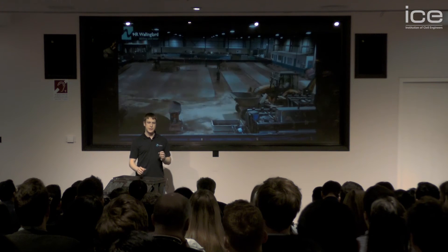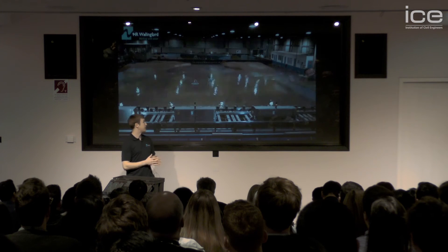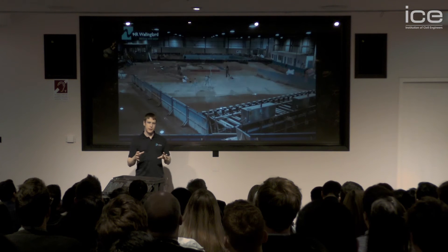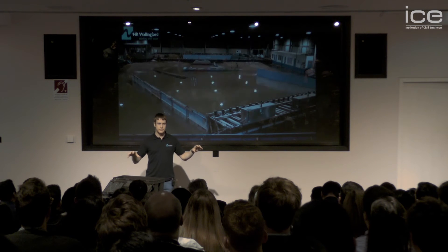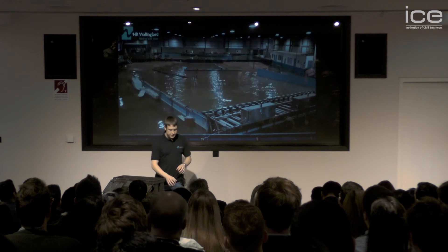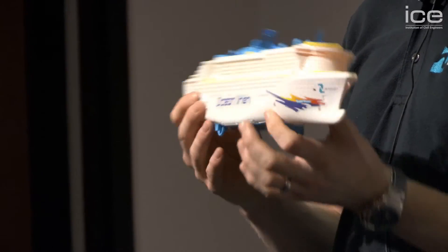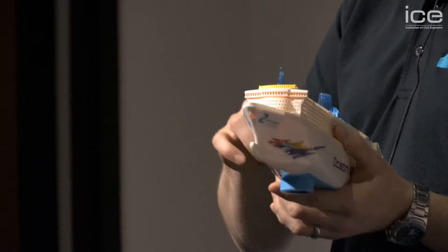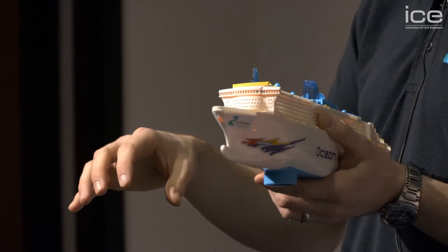With up to 8-metre wave heights at Aberdeen, unless we completely block off the whole entrance of the harbour — which sort of renders it useless — some of that wave energy is going to get in. So we started by looking at the motion of the vessels inside the harbour and measuring the forces on the mooring lines that are attaching them to the quay.